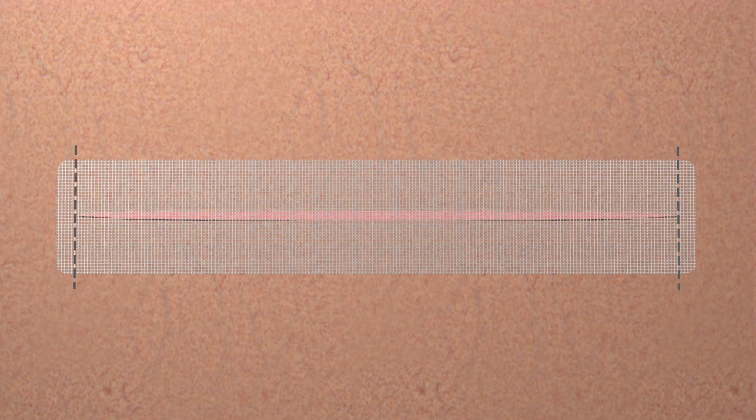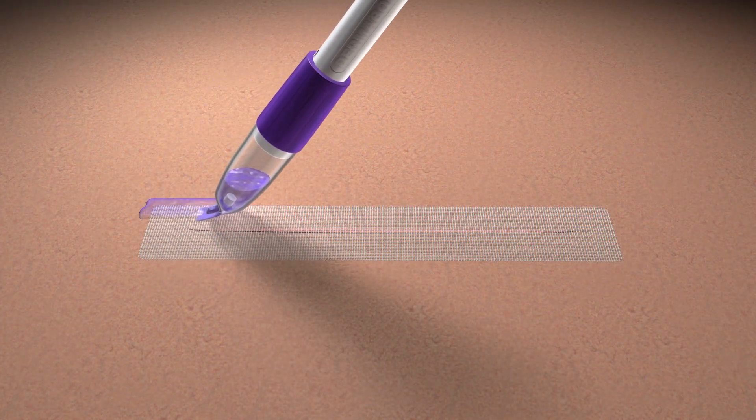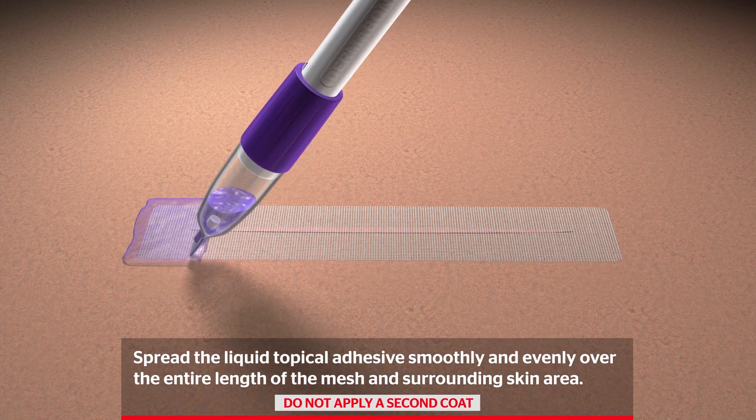First, the self-adhering mesh is applied to the incision. Next, the entire surface of the mesh is covered with the liquid topical skin adhesive.